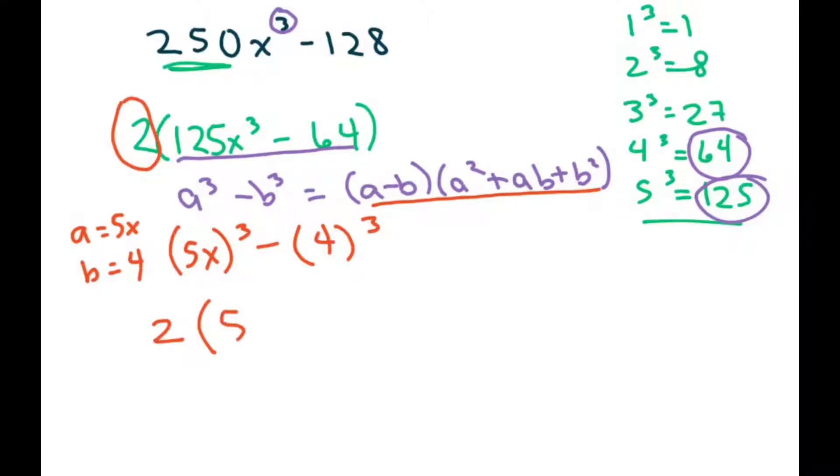Don't forget the 2 that we have here. So we have 5x minus 4, now square this, so that's 25x squared. Now it's a plus, multiply 5x and 4, so that's 20x, and then you square the 4, which is 16. And that's your final answer.